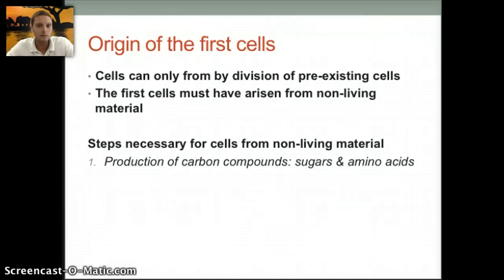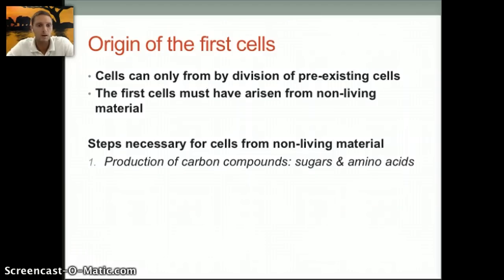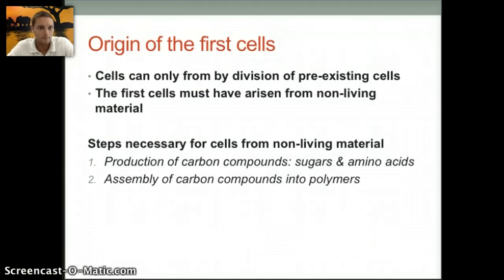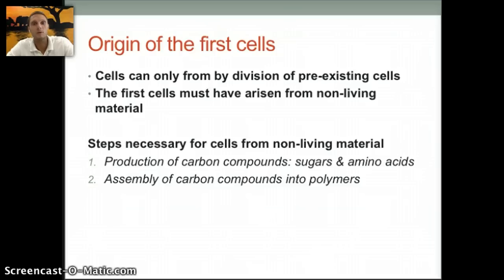This experiment showed that amino acids could be produced in an environment very different from what we see today. Later experiments confirmed this, also producing amino acids under similar conditions. Another possible source of amino acids, sugars, and related compounds could be deep sea vents, which would have the necessary energy and gases to assemble carbon compounds into polymers. That leads to the second step: the assembly of these carbon compounds into polymers. A polymer is multiple small pieces put together, like multiple sugars or multiple amino acids joined.